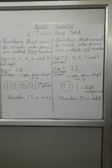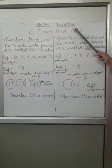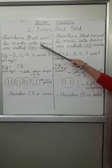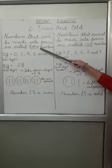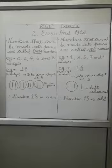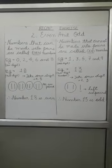Good morning students. Today we have another topic in a recap exercise that is even and odd. Numbers that can be made into pairs are called even numbers. Or we can say numbers that are divisible by 2 are called even numbers.